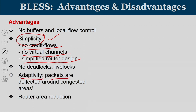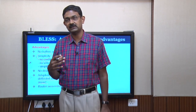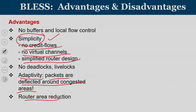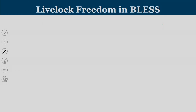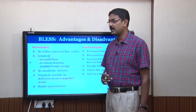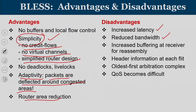BLESS also provides a bit of adaptivity because packets are deflected around congested areas — when a port is congested, flits do not move into it, and the deflection mechanism allows bending around the congestion point. Since buffers are eliminated, router area is reduced. However, packets will have a slightly higher average packet latency because they may need to get deflected and take more hops to reach the destination. There is also reduced bandwidth since without buffers, fewer packets can be accommodated in the network.